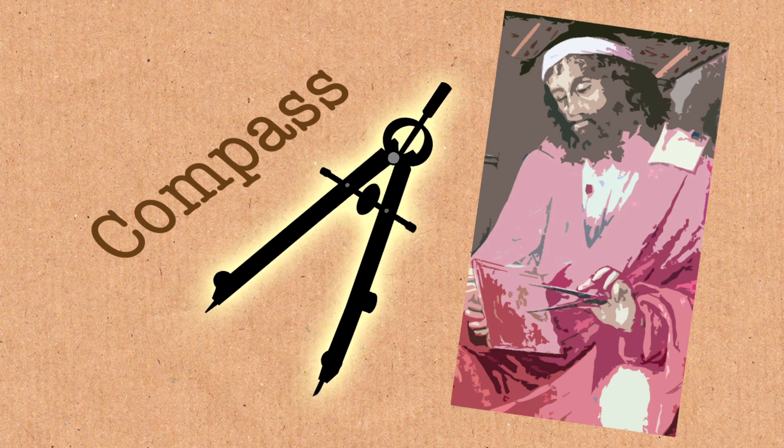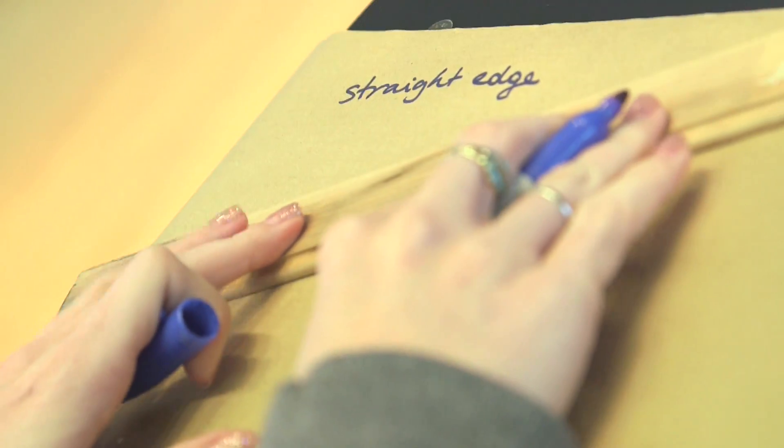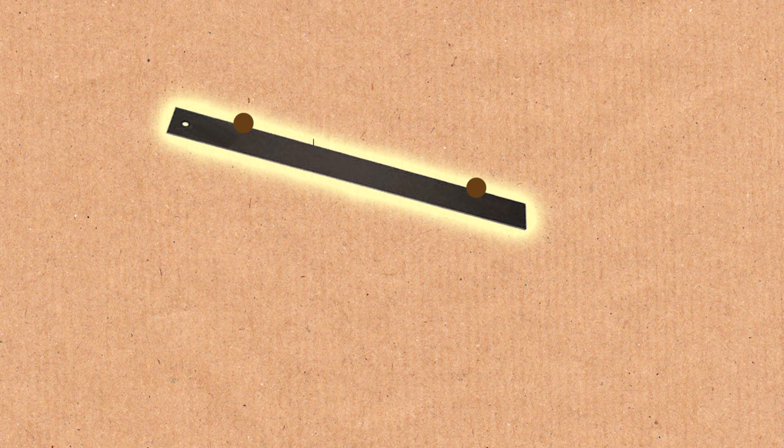Straightedge can do the following: if you have two points in the plane that you have previously somehow constructed or given to you, then you can put the straightedge there and connect them by a straight line. And the way we imagine it is that the straight line is infinitely long and the paper is infinitely big.